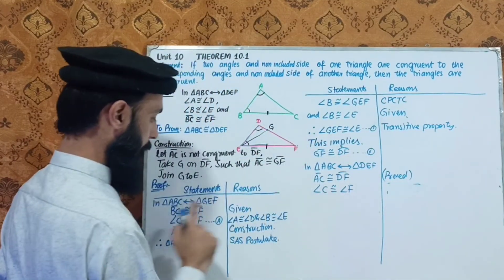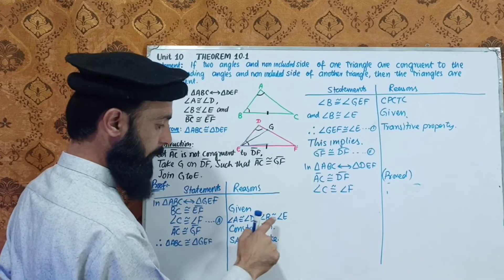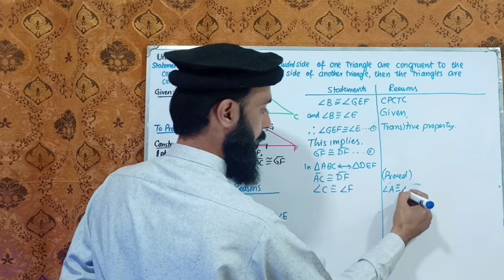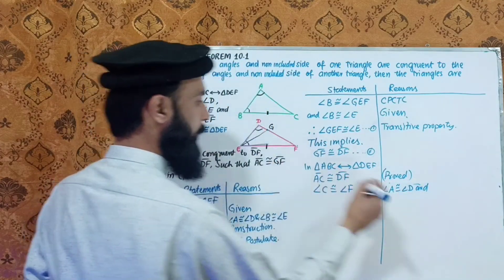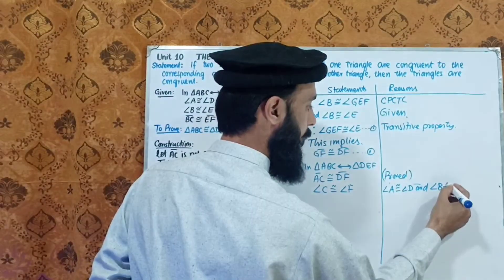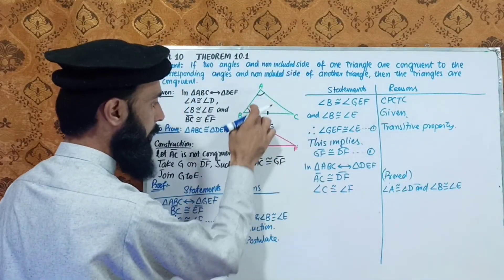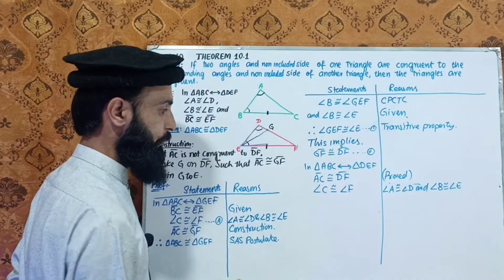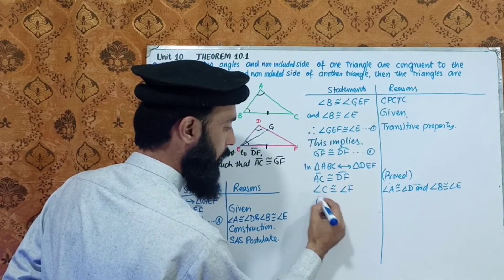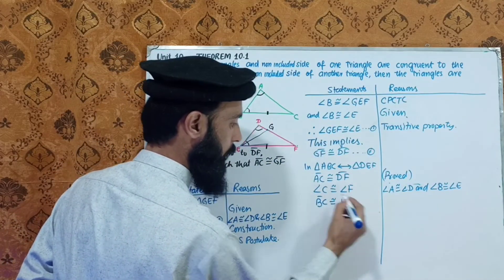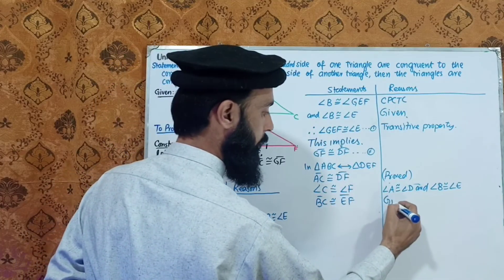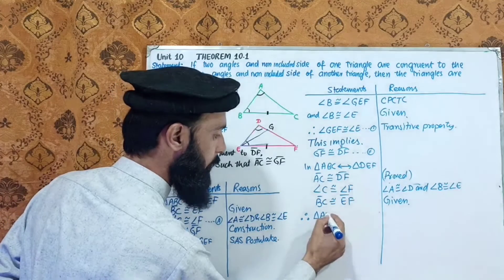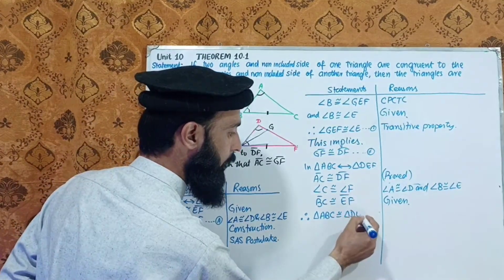C is equal to F, so angle C is congruent to angle F. Angle A is congruent to angle D, and angle B is congruent to angle E. BC is congruent to EF — that is given. Therefore, triangle ABC is congruent to triangle DEF.